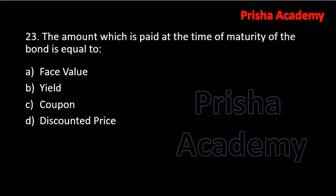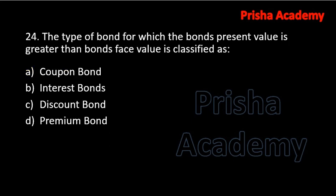Next question: the amount which is paid at the time of maturity of the bond is equal to — face value, yield, coupon, or discounted price? The answer is very simple — it is the face value.